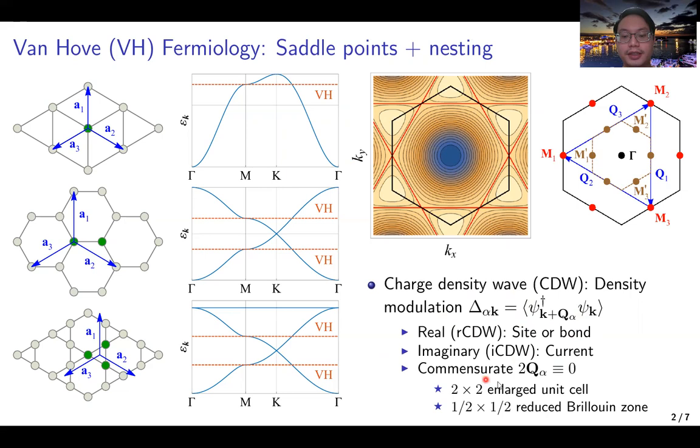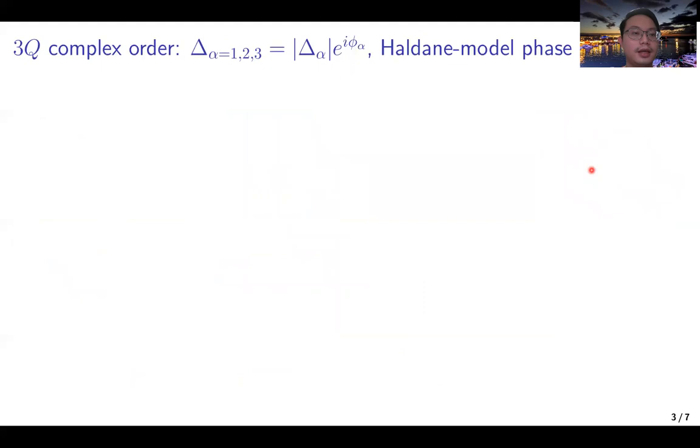An interesting point is that at the endpoints, the nesting momenta are commensurate and are half of the reciprocal lattice vector. It means we will have two by two enlarged unit cell in real space, and it is accompanied by the half by half reduced Brillouin zone in momentum space. The high symmetry points are now the gamma and M' points, and also the K' points.